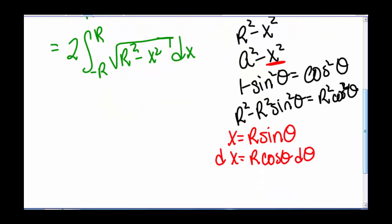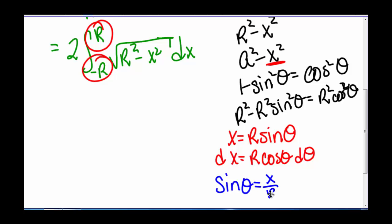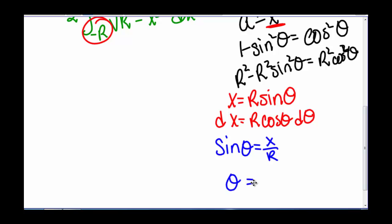We also need to find our bounds in terms of theta, because right now they're in terms of x. If sine of theta equals x divided by r, then theta equals the inverse sine of x divided by r. We know x goes from negative r to r, so the argument of the inverse sine goes from negative 1 to 1, which is within the valid domain, so we're fine.